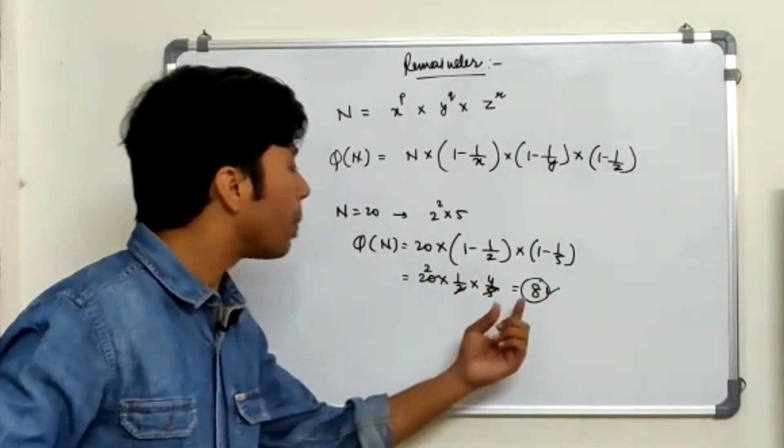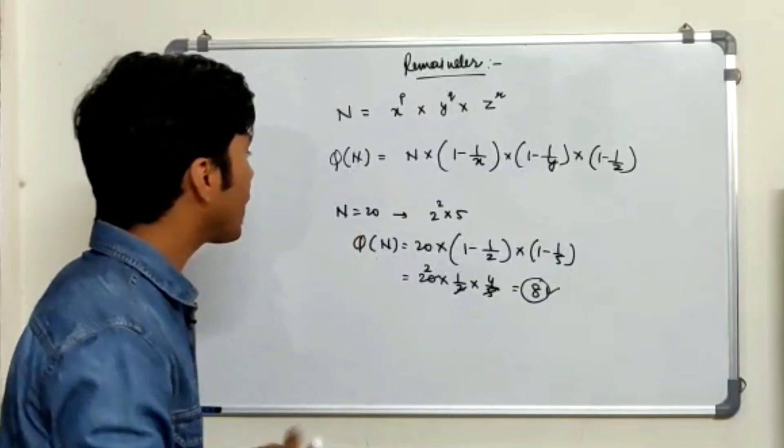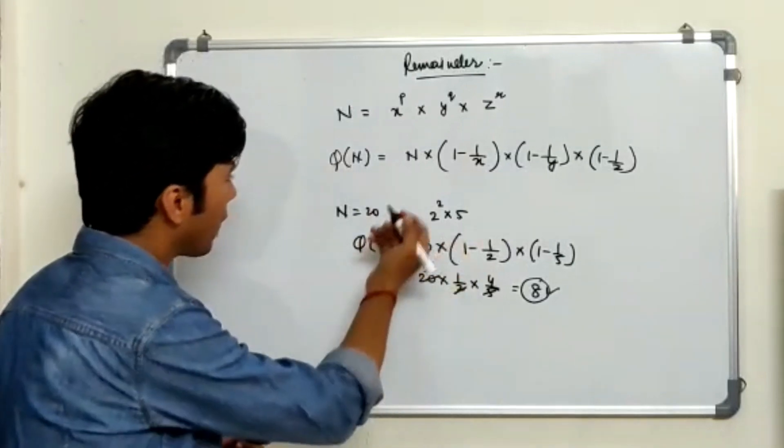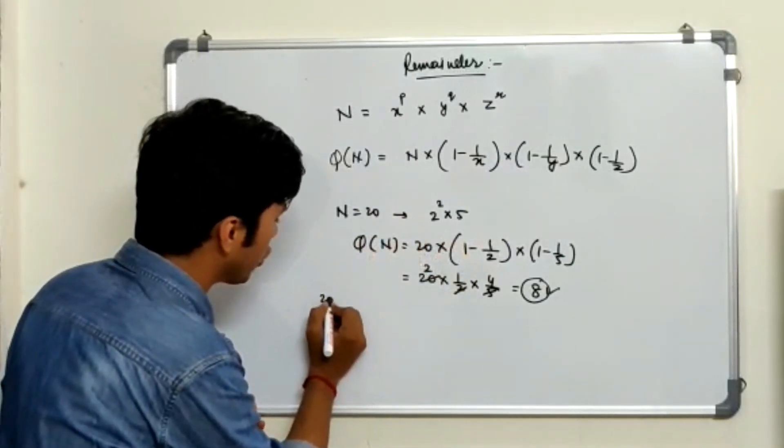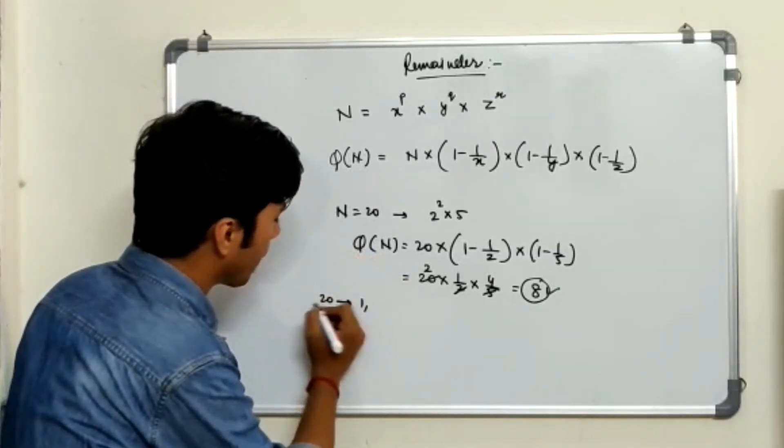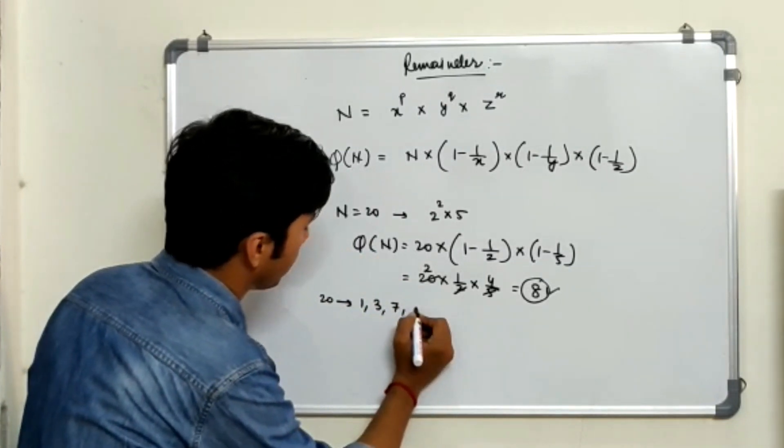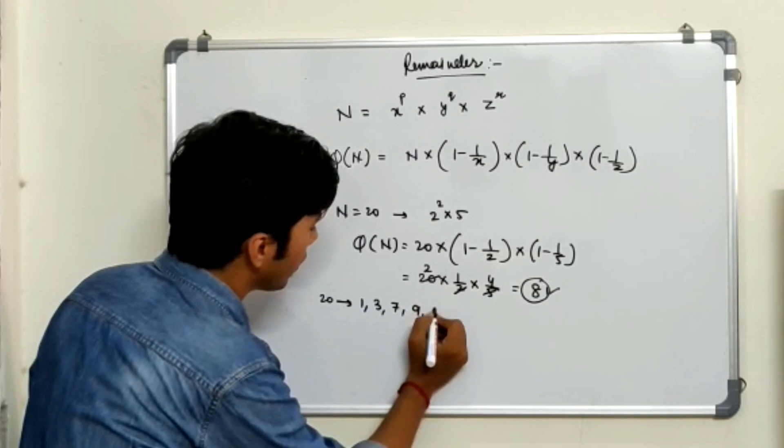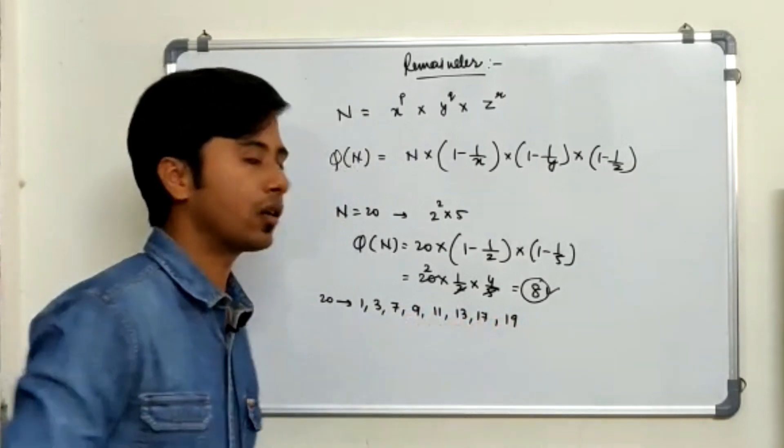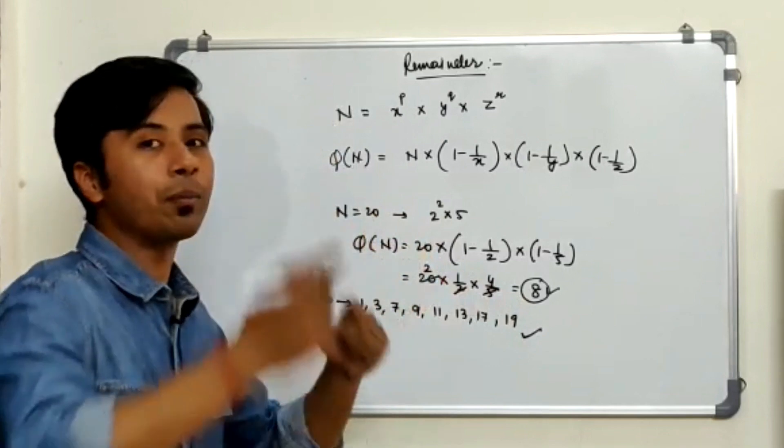Now 8 is the number of numbers which are coprime below this 20. So it means there are 8 such numbers which are below 20 and are coprime to 20. So what are the numbers which are coprime to 20 and below 20? I can see that 1 is coprime to 20, then 3, 7, 9, 11, 13, 17, and then 19. So if I check here, this is 8. Yeah, exactly. So we have 8 numbers which are coprime to 20 and below 20.